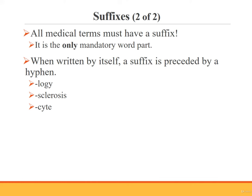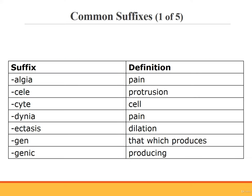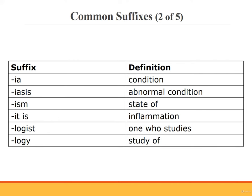Anytime a suffix is written by itself, it is preceded by a hyphen, as you can see in these examples: -logy, -sclerosis, -cyte. The next few slides list some common suffixes: alge, -eal, -cyte, -dynia, -ectasis, -gen, -genic, -ia, -ism. Itis means inflammation. An example of a medical term using the suffix itis is esophagitis, which means inflammation of the esophagus.